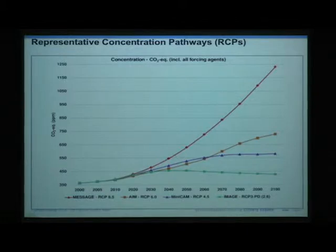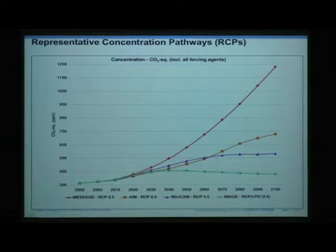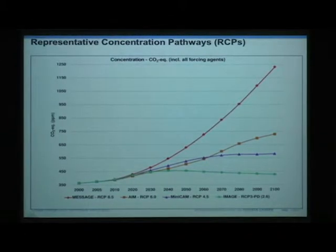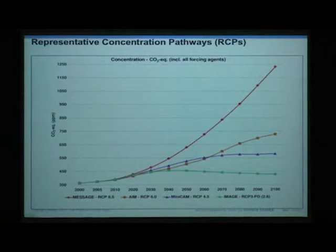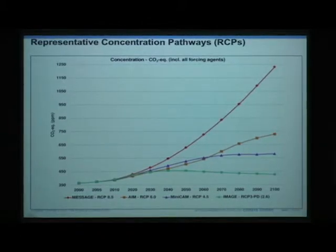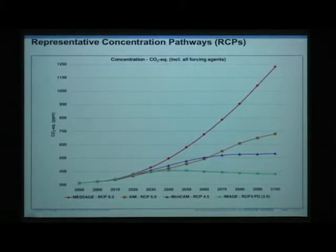This is sometimes called the business-as-usual type curve, and this is what it looks like if we start really cutting back on greenhouse gases in the next couple of decades. There's a lag — even if we cut back, it will still rise for a little bit and then start to drop off.